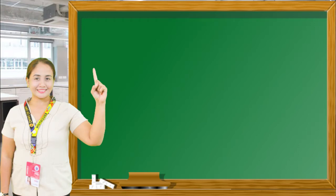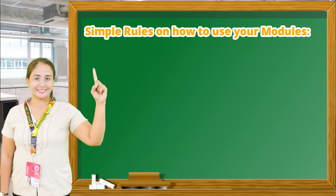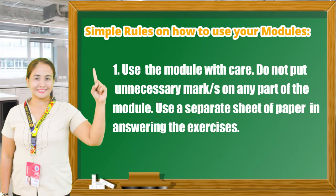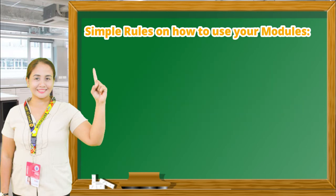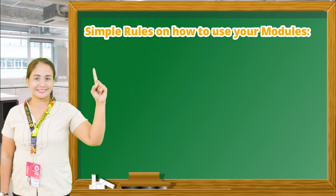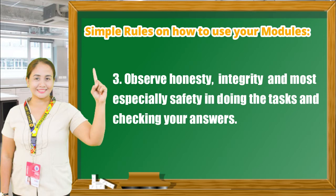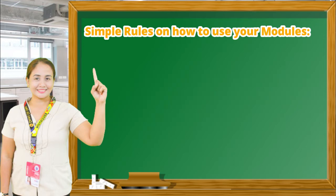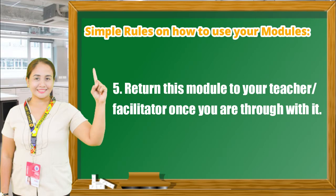Before we proceed, here are simple rules on how to use your modules. Number one, use the module with care — do not put unnecessary marks and use a separate sheet of paper for answering exercises. Number two, read the instructions carefully before doing each task. I will be with you as we accomplish tasks for Quarter Four, Module One of Two of cookery. Number three, observe honesty, integrity, and safety. Number four, finish the task at hand before proceeding to the next. Number five, return this module to your teacher or facilitator once you are through with it.